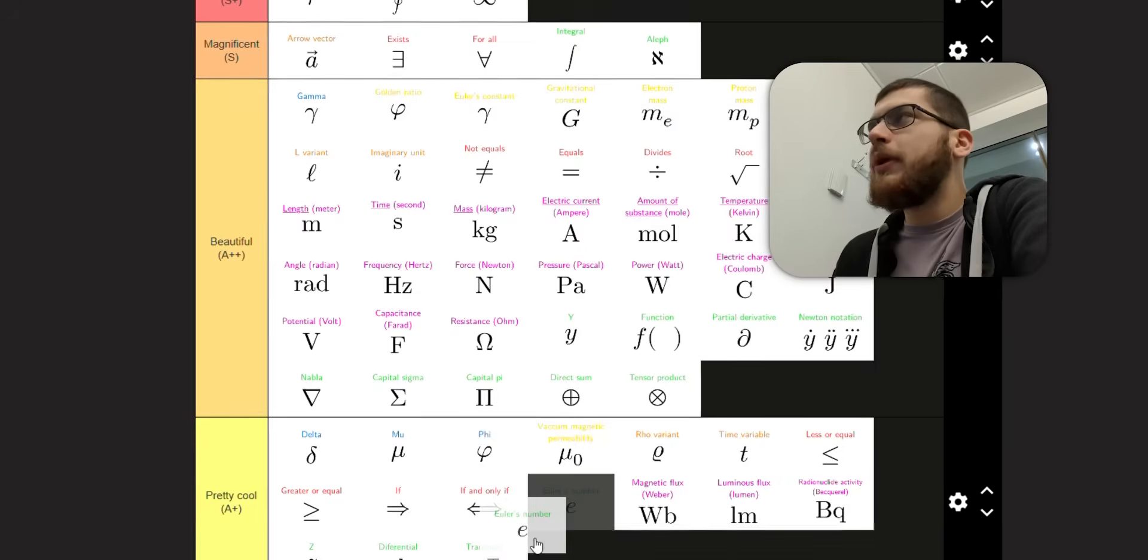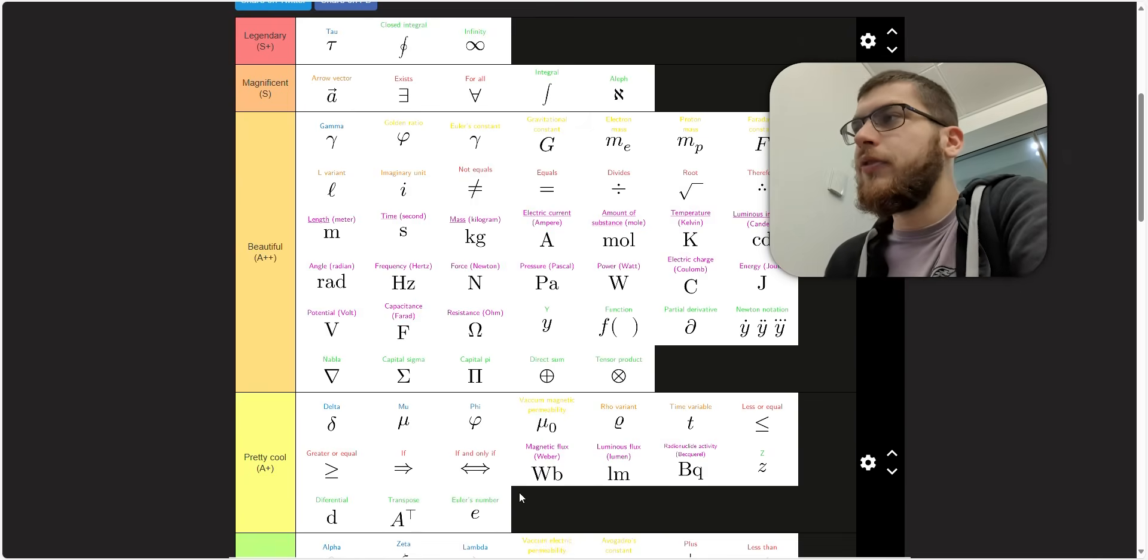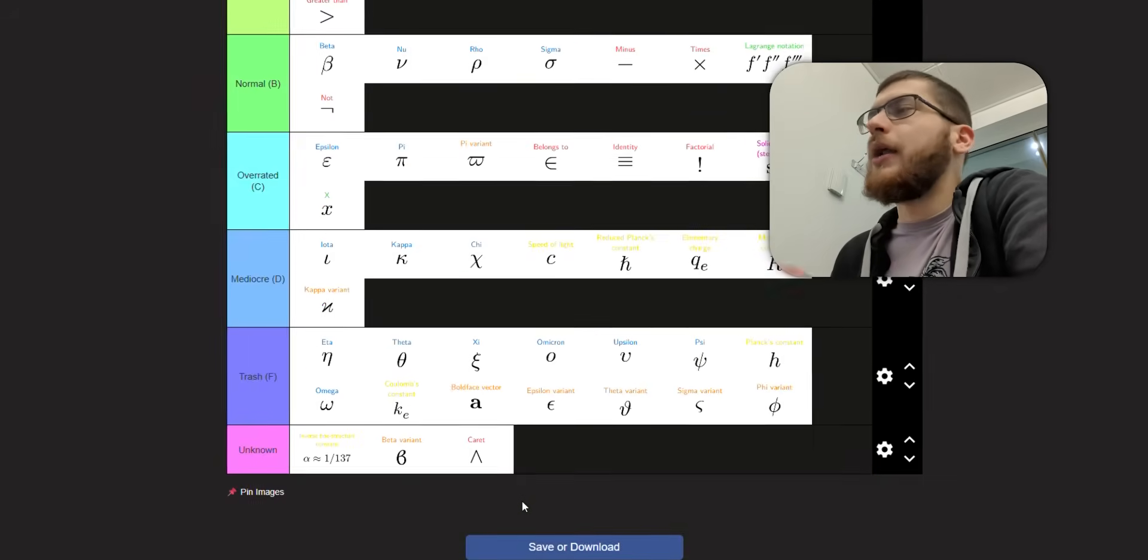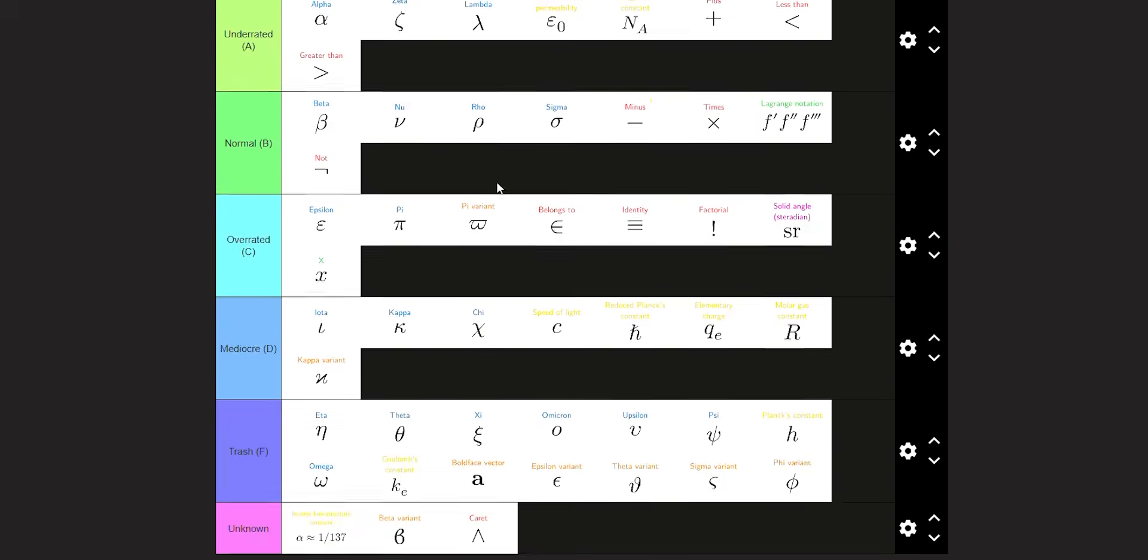Euler's number for e. That can be confused for other things, though. But it does make sense to use e for Euler's number. I put it in A+. I would have personally put capital E, but I don't know. Maybe that could be confused for energy or something. Anyway, those are all my symbols ranked. If you disagree with the symbols, then let me know in the comment section, and I will be sure to tell you why you're wrong.